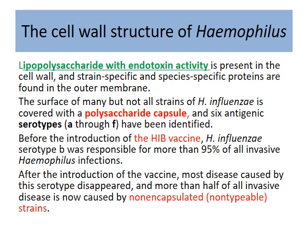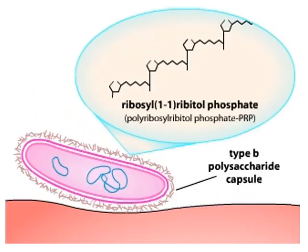The most important virulence factor is PRP — polyribitol phosphate — which gives this bacteria an added advantage for attachment. It has hair-like projections and attaches to respiratory cells, after which attachment, invasion, and infection occur.